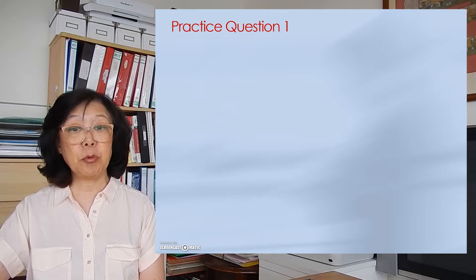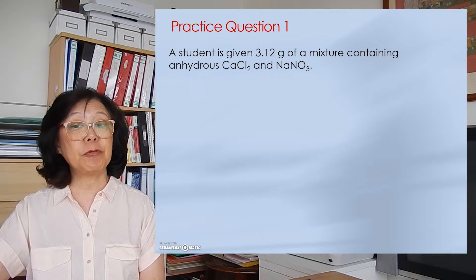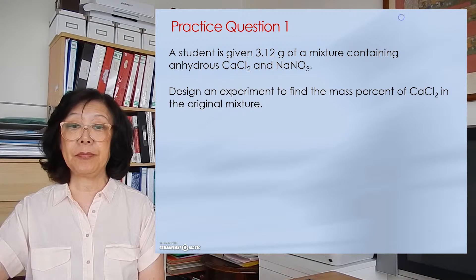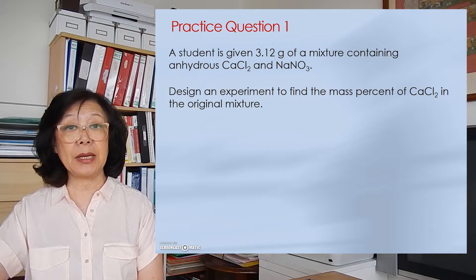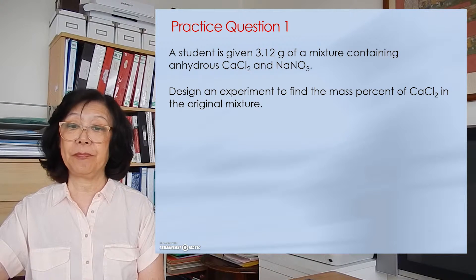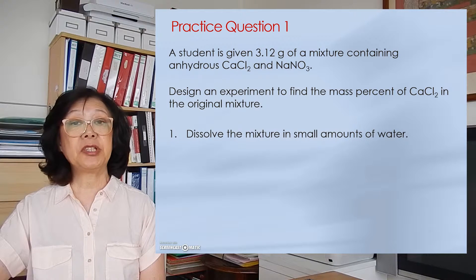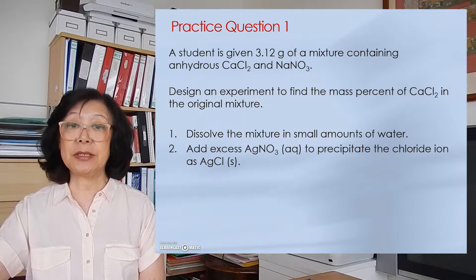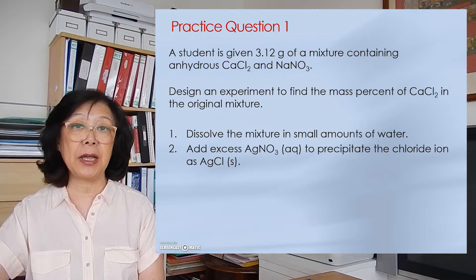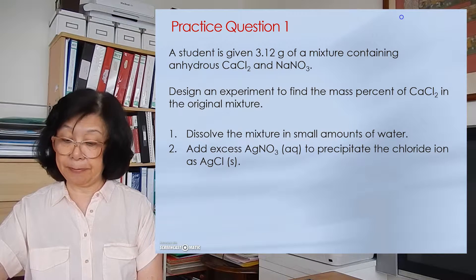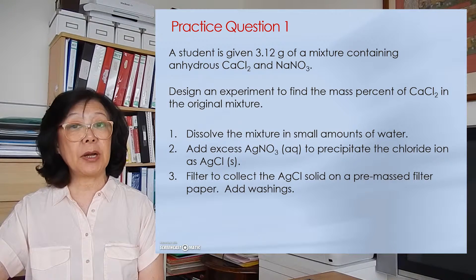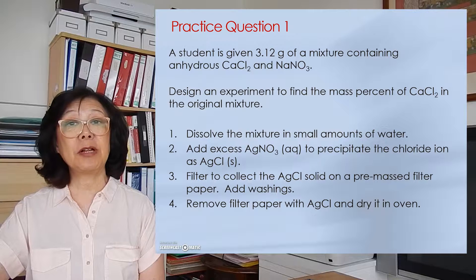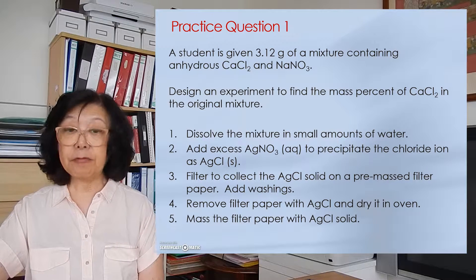Practice question number 1. A student is given 3.12 grams of a mixture containing anhydrous calcium chloride and sodium nitrate. Design a procedure to isolate the calcium chloride and find the mass present. First, we dissolve the mixture in a small amount of water in a beaker. Then we add excess silver nitrate to precipitate out all the chloride ions to form silver chloride precipitate. This silver chloride precipitate will then be filtered, washed, dried in the oven, and re-massed.